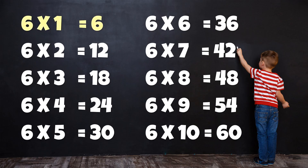Table of 6: 6×1=6, 6×2=12, 6×3=18, 6×4=24, 6×5=30, 6×6=36, 6×7=42, 6×8=48, 6×9=54, 6×10=60.